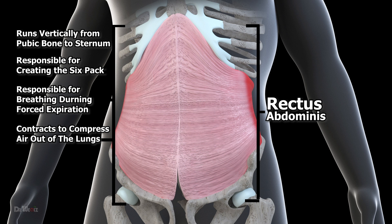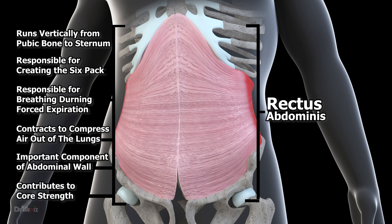While the rectus abdominis may not be as critical for core stability as the transversus abdominis, it is still an important component of the abdominal wall and contributes to overall core strength.